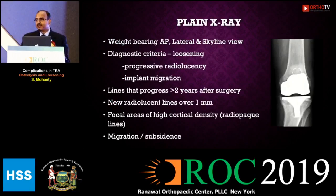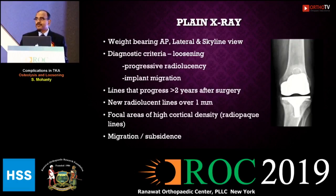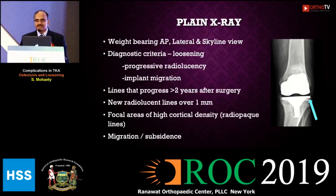To diagnose osteolysis, weight-bearing AP, lateral, and skyline views can be taken, but until about 20 to 30 percent of bone is destroyed, X-ray will not show the osteolysis. The diagnostic criteria for loosening and osteolysis include progressive radiolucency and implant migration — radiolucent lines progressing more than two years after surgery, or any new radiolucent lines over one millimeter.